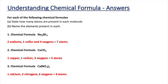In the last question we have Ca(NO3)2. Remember everything in the brackets has to be multiplied by two. So it's one calcium, two nitrogens, and six oxygens, giving a total of nine atoms altogether.